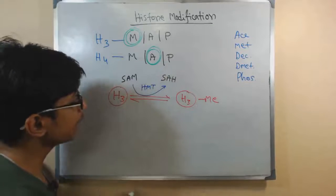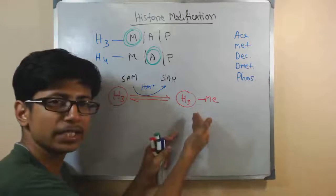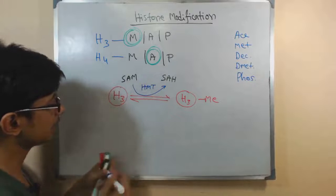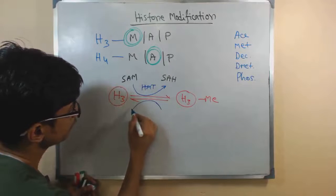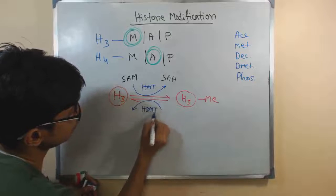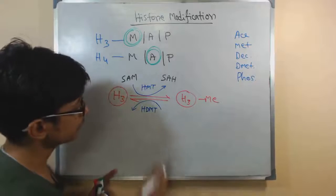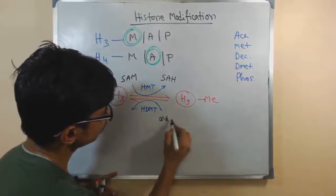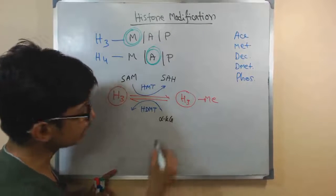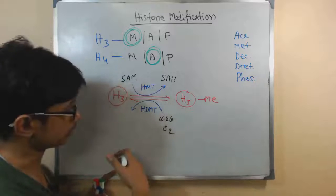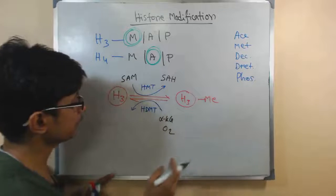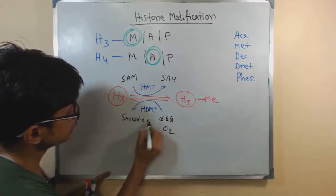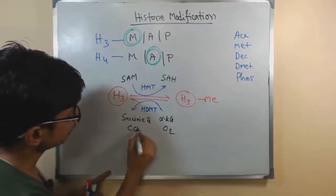Similarly, the opposite thing, demethylation of H3 to normal H3, can also take place. That is brought by histone demethylase or HDM. In this case, what we see here is that alpha-ketoglutarate and oxygen are required for this process to occur. With oxidation, it removes the methyl group and will generate succinate along with carbon dioxide.